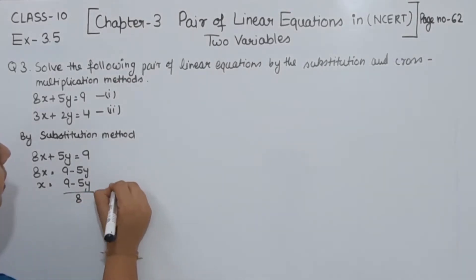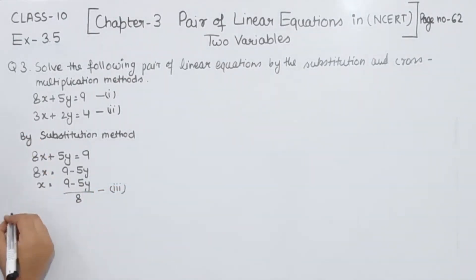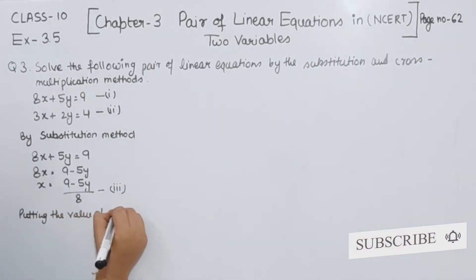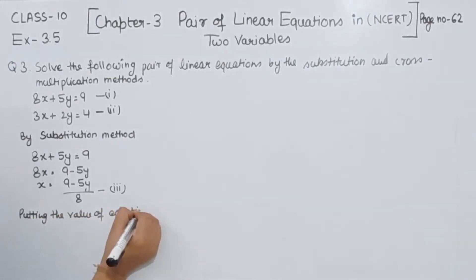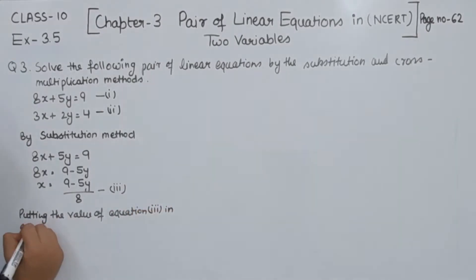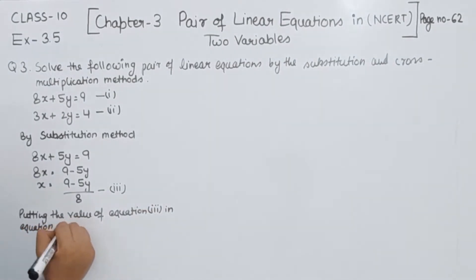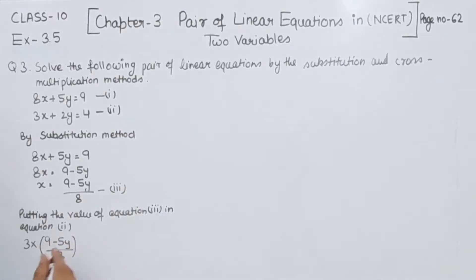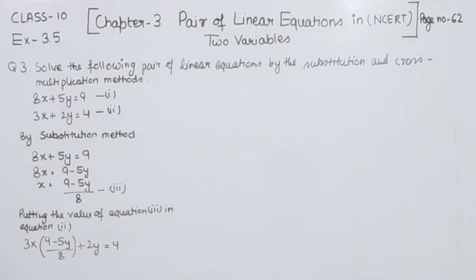This expression we label as equation number 3. We are going to put this into equation number 2. Substituting the value of equation 3 into equation 2, we write: 3 multiplied by (9 minus 5y) over 8, plus 2y, equals 4. Now we are going to multiply this out.